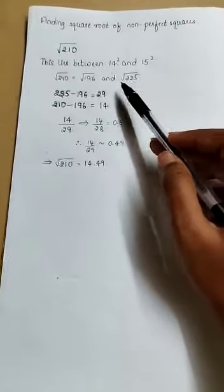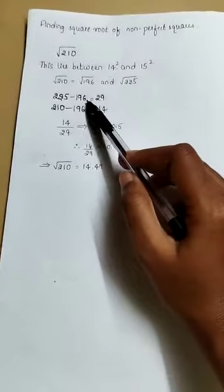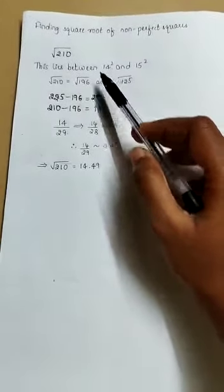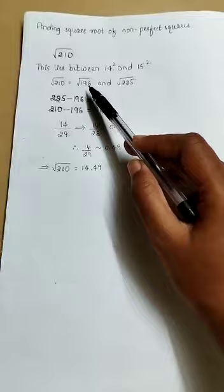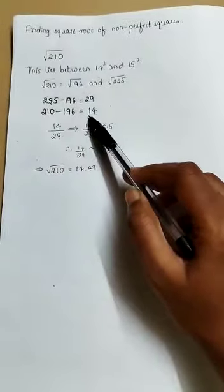We can find the square root by taking the difference of these two numbers, i.e., 225 minus 196 gives 29. The difference between the given number and the first number is also obtained, i.e., 210 minus 196 is equal to 14.